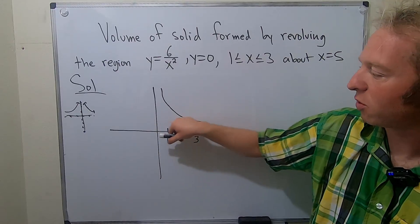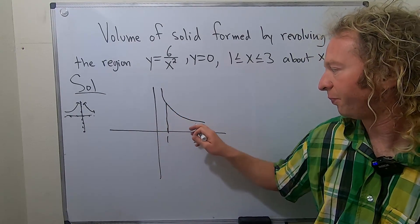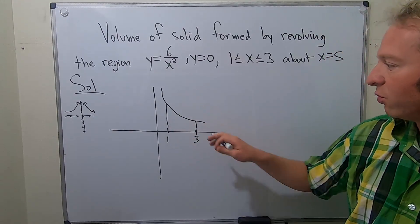So maybe this is 1 and maybe this is 3. Okay, and then y equals 0 is this horizontal line. So we're basically looking at this particular region here. Okay, so this is the region we're looking at.